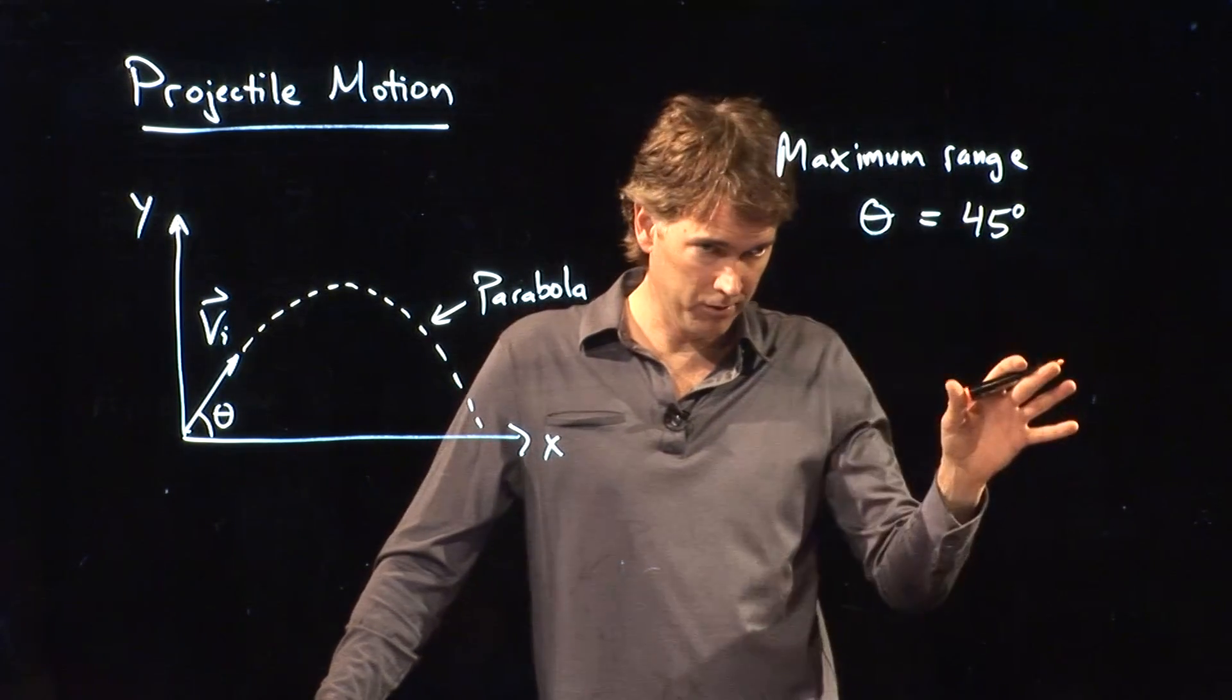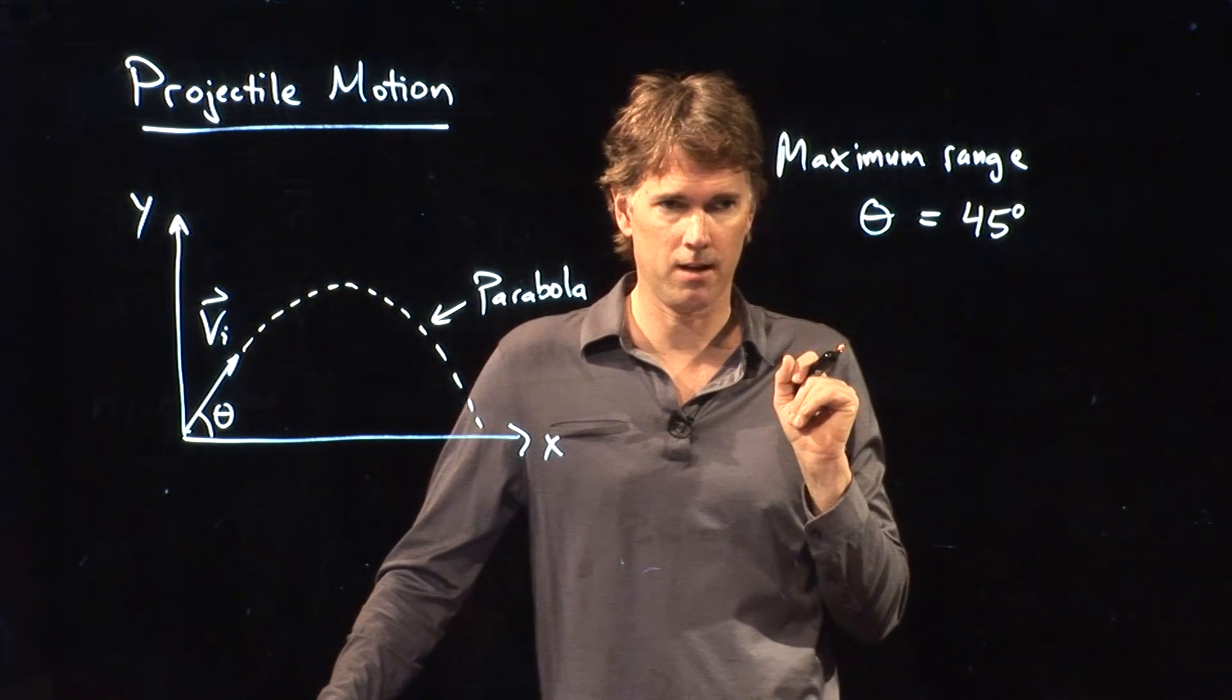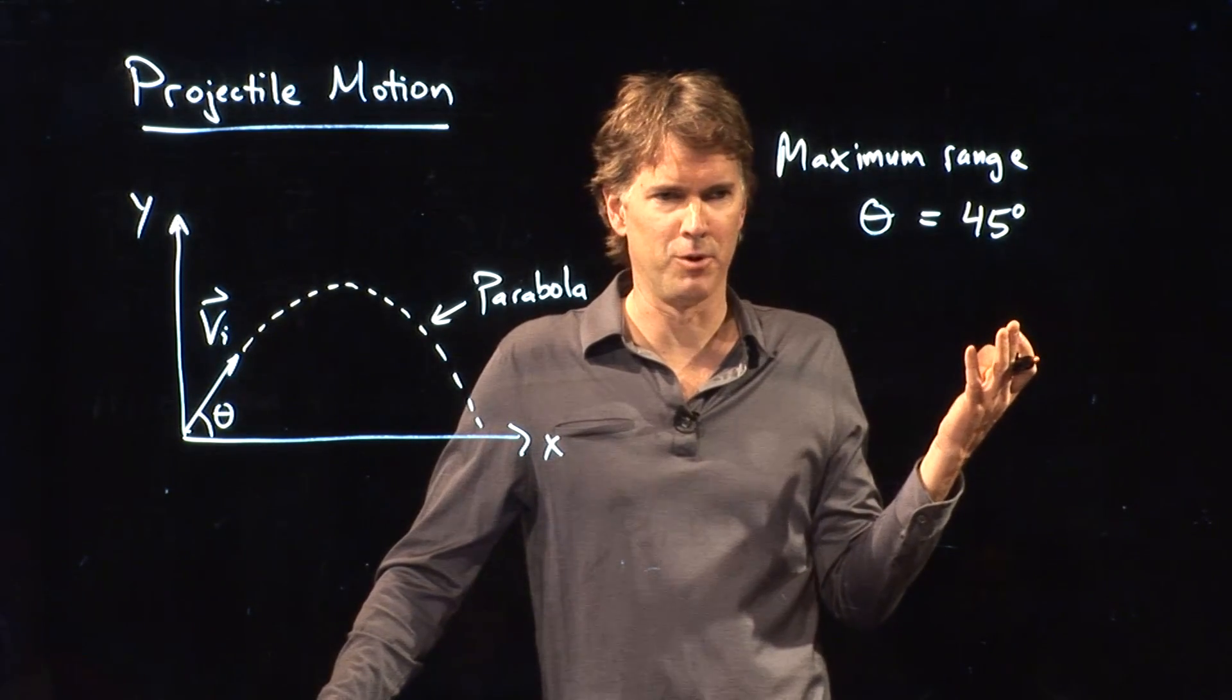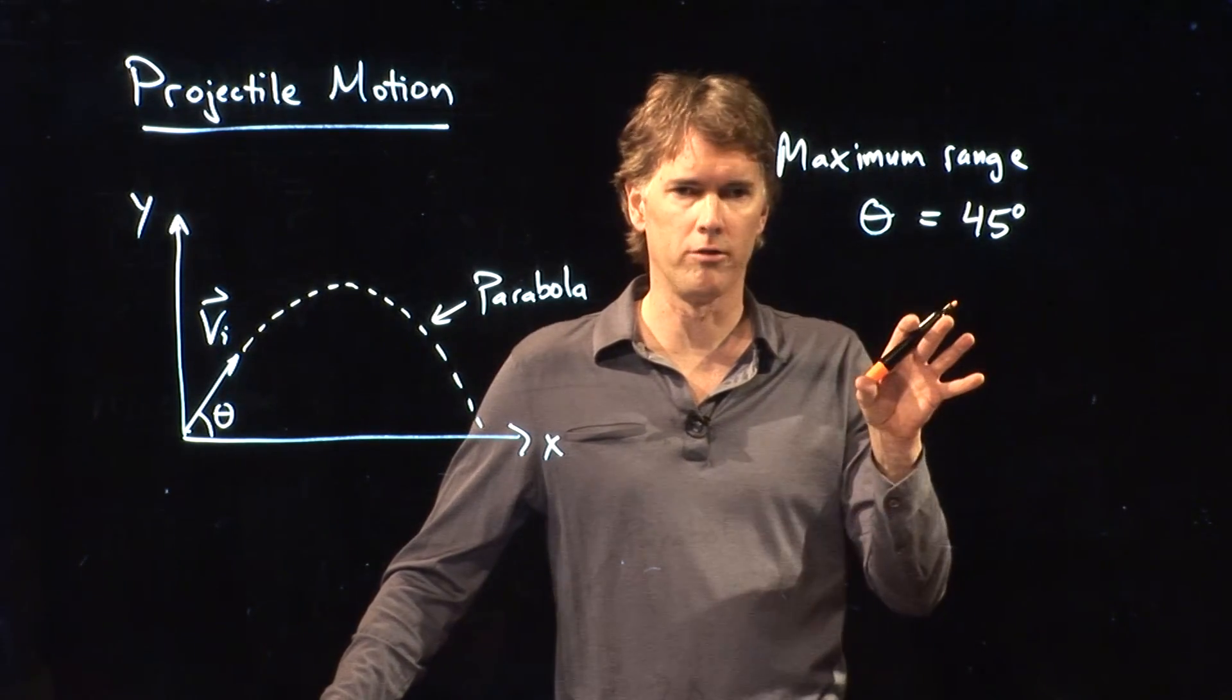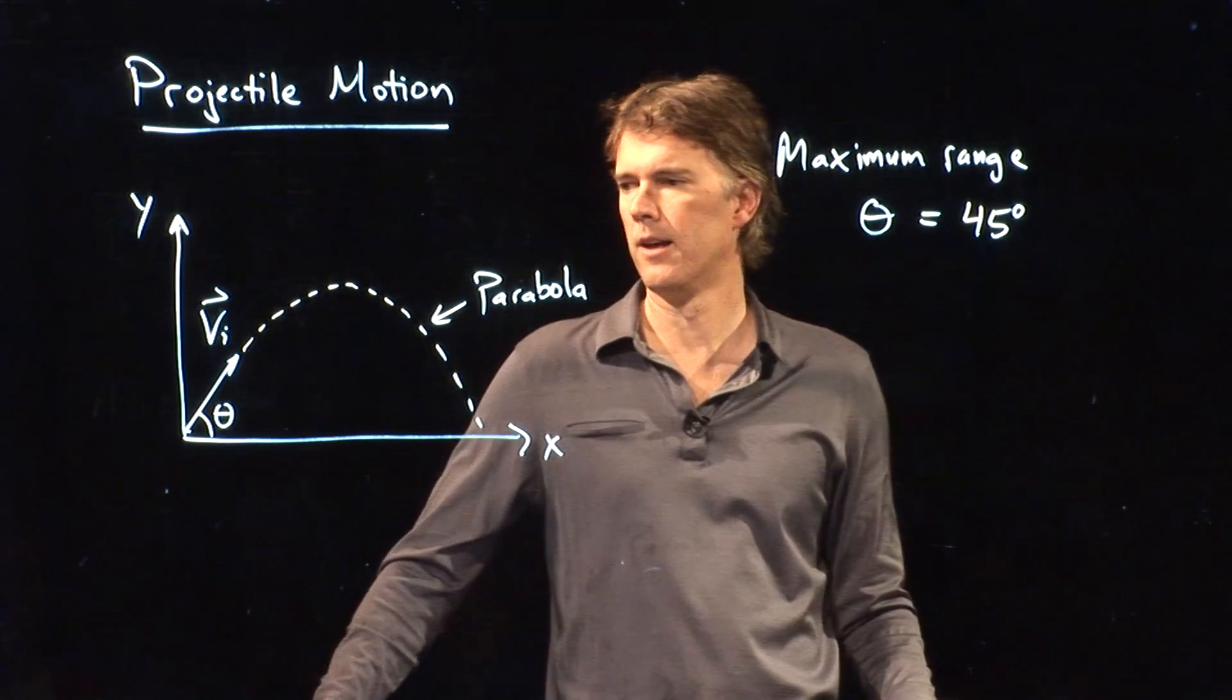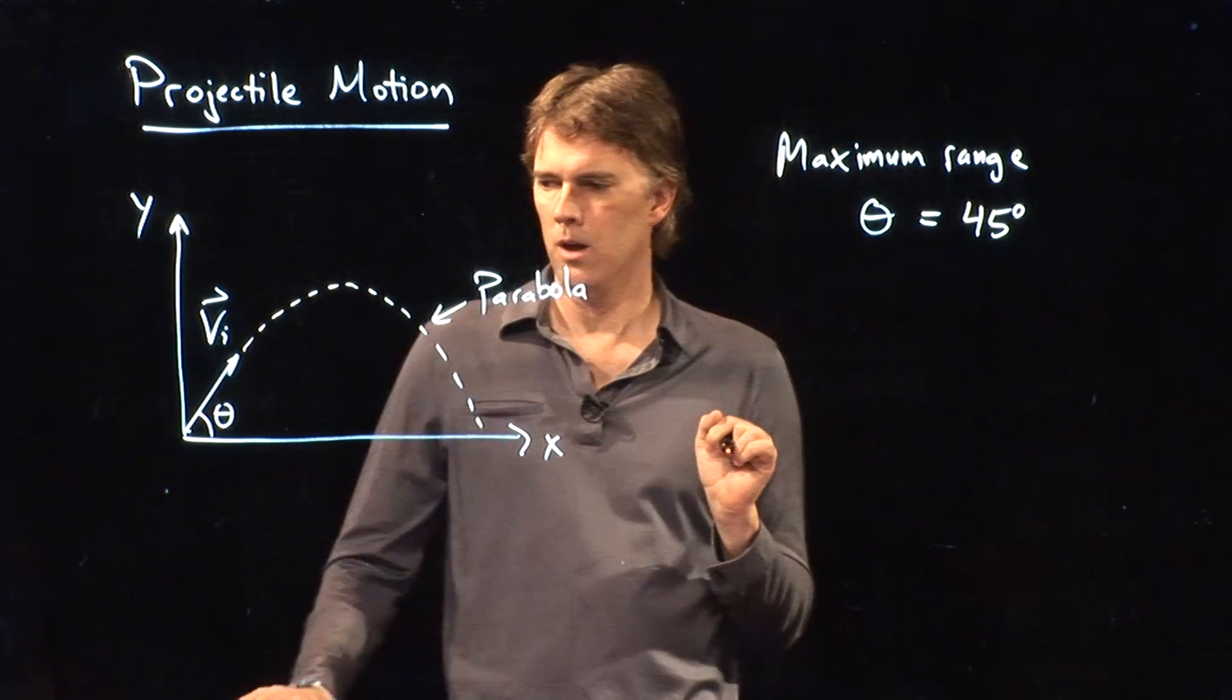Now, this is ignoring air resistance, of course. When you include air resistance, it's actually a lot lower than that. So if you ask a real baseball player, are you going to throw it at 45 degrees? They're going to say no, I never throw it at 45 degrees. And that's because they're worried about air resistance. And the same with golf. You never launch a golf ball at 45 degrees because of air resistance. It's considerably lower than that. But in the absence of air resistance, 45 degrees will definitely give us maximum range.